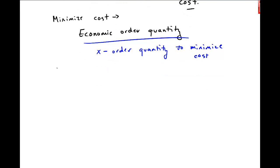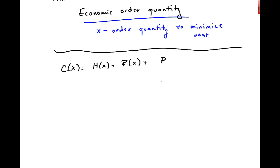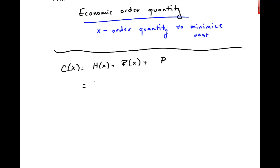So we begin just with this function, C(x) is equal to this H(x) plus R(x) plus P, this inventory purchase cost. And we go back to the model that we were using. H(x) is this carrying cost per unit times x over 2. R(x) is this cost per order times this total units over x, and then I have P out here, this constant number.